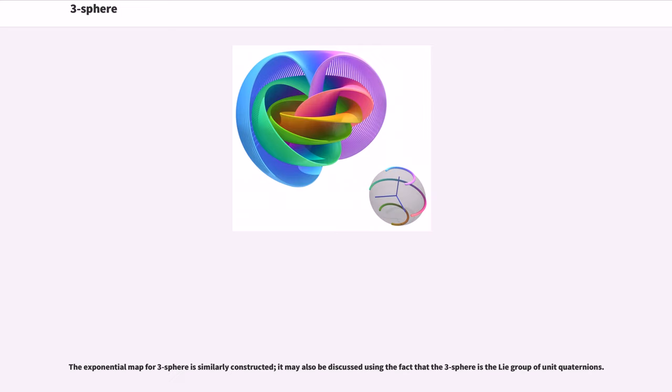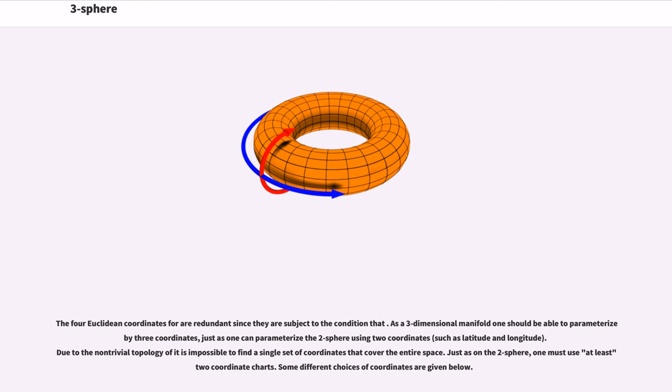The exponential map for the three-sphere is similarly constructed; it may also be discussed using the fact that the three-sphere is the Lie group of unit quaternions. The four Euclidean coordinates for are redundant since they are subject to the condition that. As a three-dimensional manifold one should be able to parameterize by three coordinates,